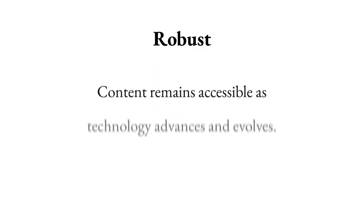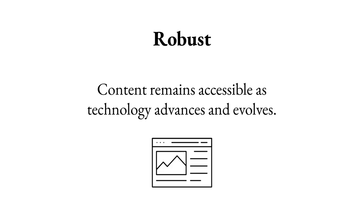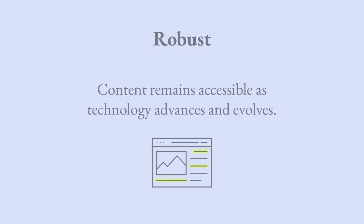And lastly, Robust. Robust means content remains accessible as technology advances and evolves. For example, use correct markup to guarantee compatibility with current and future browsers and assistive technologies.